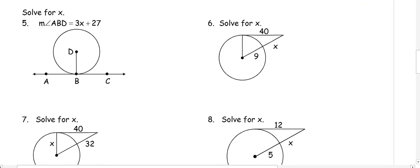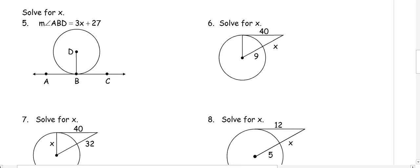In number one, we want to find the measure of angle ABD. ABD is going to be a right angle because BD is a radius drawn perpendicular to the tangent line. So we have 3X plus 27 equals 90. Subtracting 27 from both sides gives 3X equals 63, so X equals 21.